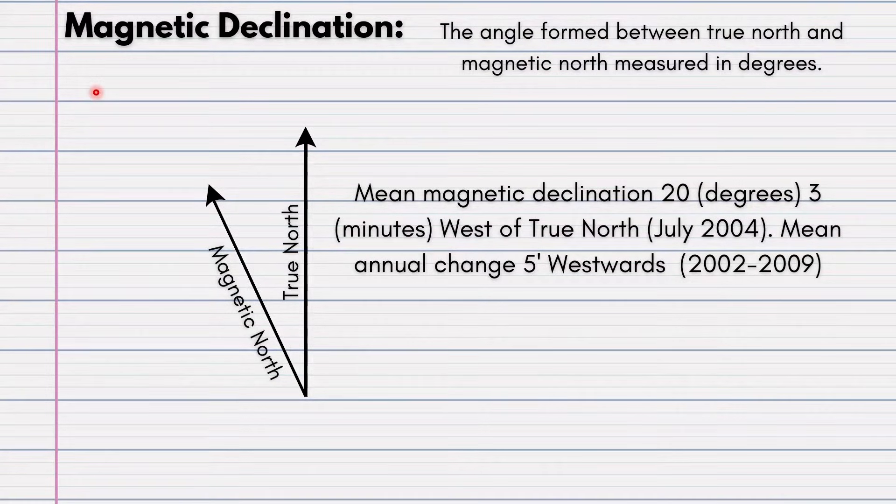Magnetic declination is definitely the hardest calculation that you will experience when you are calculating your GIS questions. What is magnetic declination? It is the angle formed between true north and magnetic north measured in degrees.